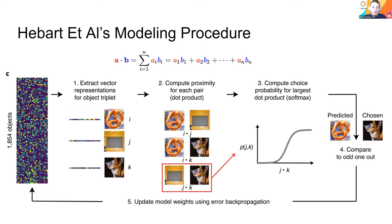We'll see in their results how well the model does and whether that argues for whether it accurately captures human object similarity representations. This is a bottom-up approach but I think it ends up being very similar to supervised learning — they're trying to train this model and correcting it each time to get better and better at predicting these odd-one-out judgments.